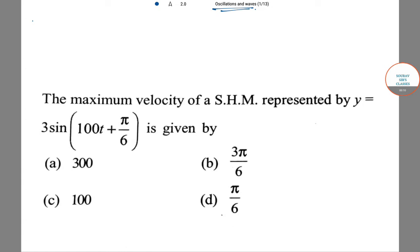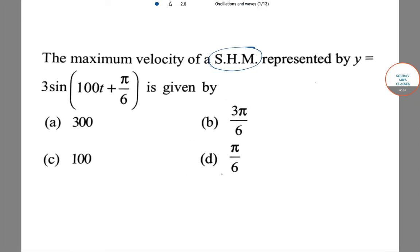The first problem: the maximum velocity of a simple harmonic motion represented by y = 3 sin(100t + π/6) is given by - we need to find the maximum velocity of this given SHM.